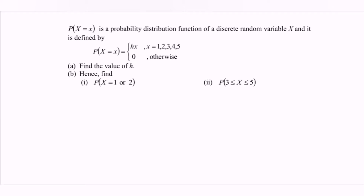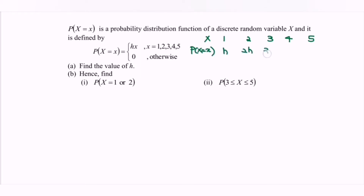In order to find the value of h, my suggestion is to build up the probability distribution table. So here we have the random variable x with values 1, 2, 3, 4, and 5, and the corresponding probabilities h, 2h, 3h, 4h, and finally 5h.